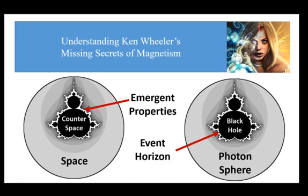Now we are going to look at another scale of organized matter: the black hole. Here, the black hole corresponds to the domain of counterspace. The not-well-known photon sphere corresponds to the domain of space. The black hole can be thought of as counter-spatial contraction, and the photon sphere can be thought of as spatial expansion. The domain separator in this case is the event horizon, which is an emergent property of the interaction between space and counterspace.